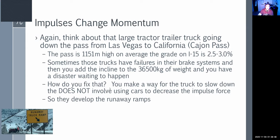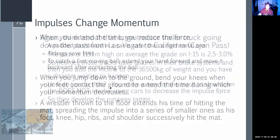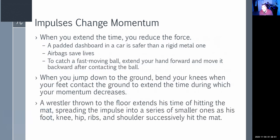To reduce force, we can extend time. Padded dashboards are a great example — cars from the 50s and 60s had steel dashboards. If you hit that dashboard, you'd go unconscious. That's why we added padded dashboards and eventually airbags — designed to slow down your forward momentum. The downside is when airbags come out too fast, like the Takata settlements, they can actually increase the force instead.